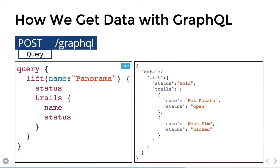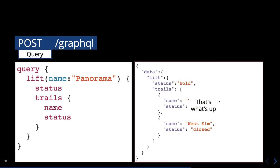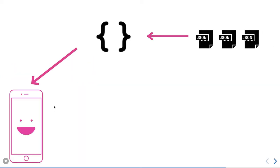With GraphQL, you send your query via HTTP POST to a single endpoint — forward slash graphql — and everything you're requesting is inside the HTTP body. The endpoint is always the same: forward slash graphql. You just specify what you need — for example, a lift named 'Panorama' and only these specific status fields, with trails as a nested object. You get exactly that data, nothing more, nothing less — no additional round trip calls to the server.